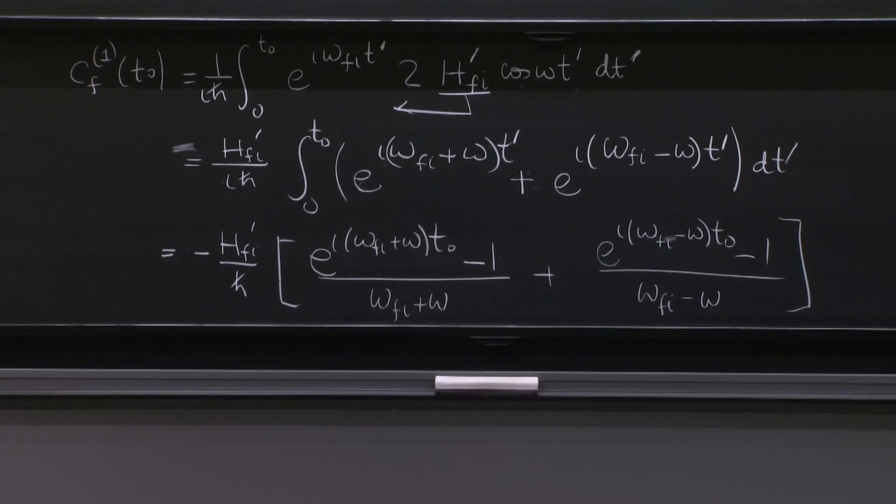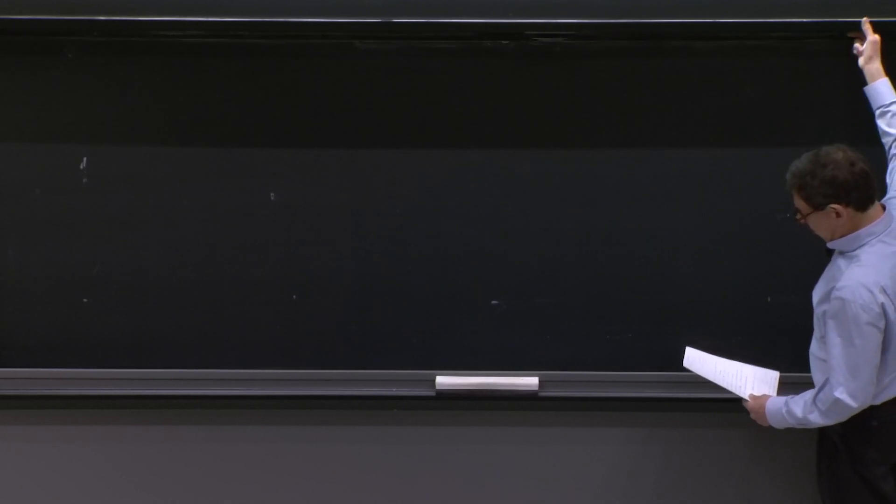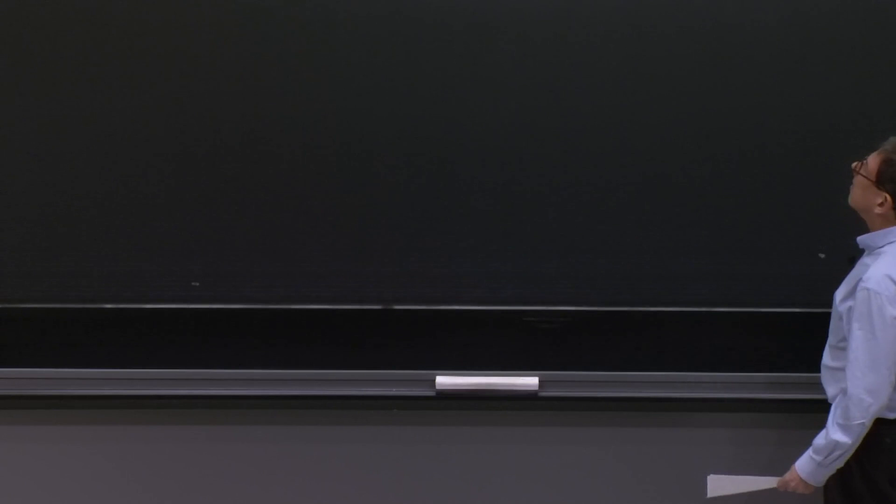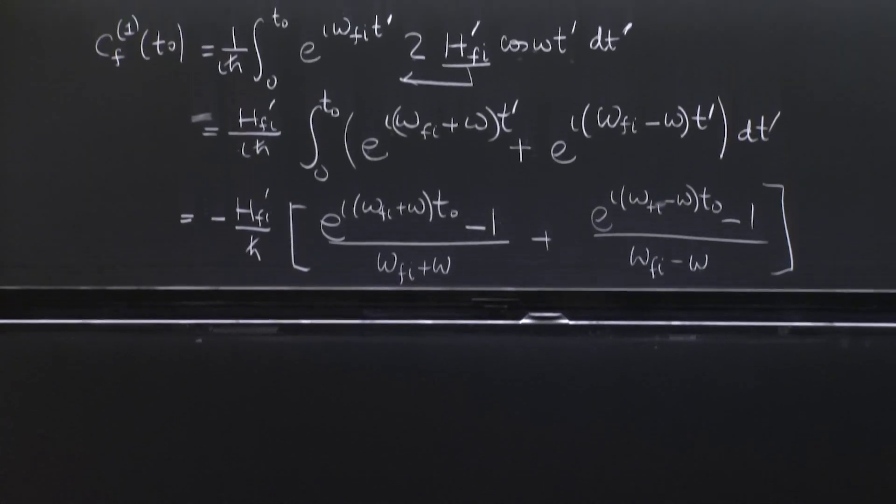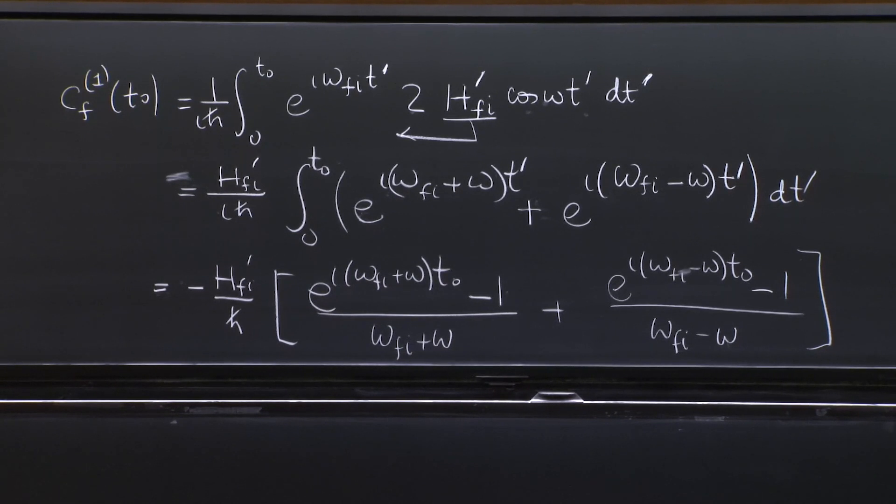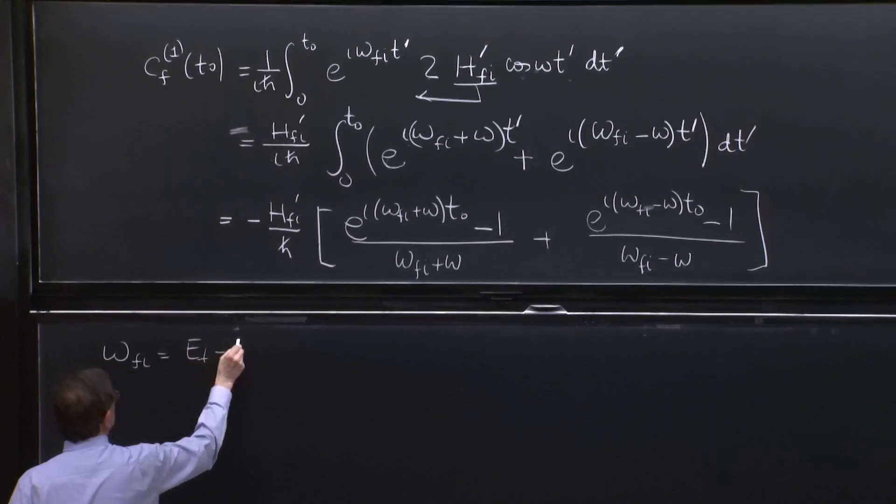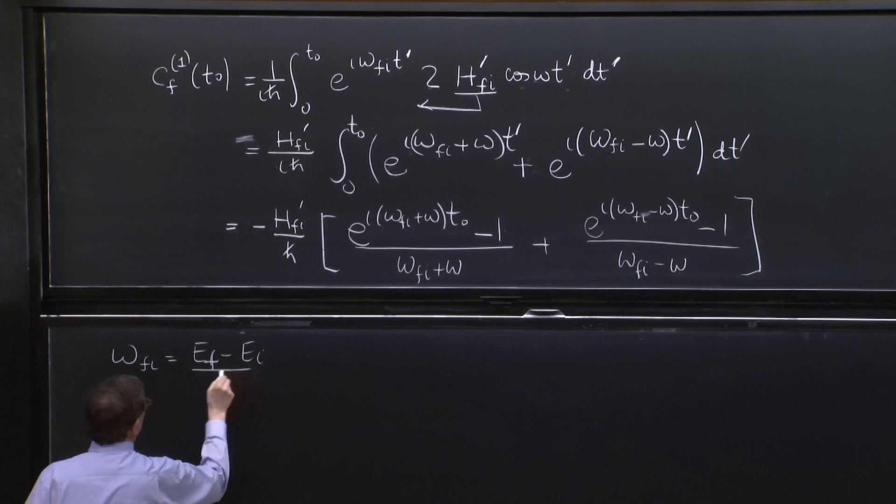Our integral is there. It's done. And now it's time to appreciate what it tells us, because it tells us something very important, this formula. So you look at this and you say, OK. This is the transition amplitude to a state omega, I'm sorry, state f, final state. And it depends on omega fi. And omega fi is just Ef minus Ei over h bar.